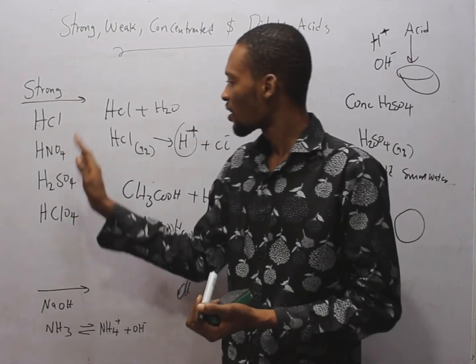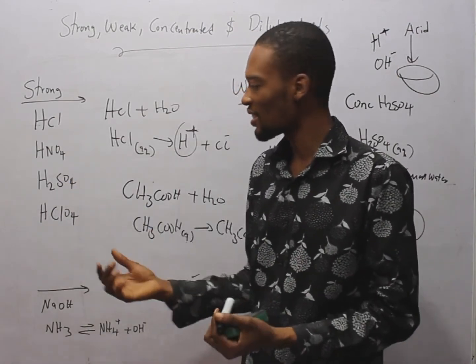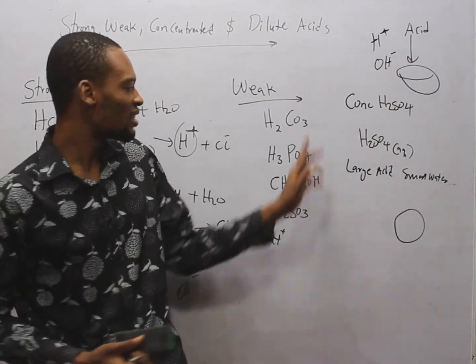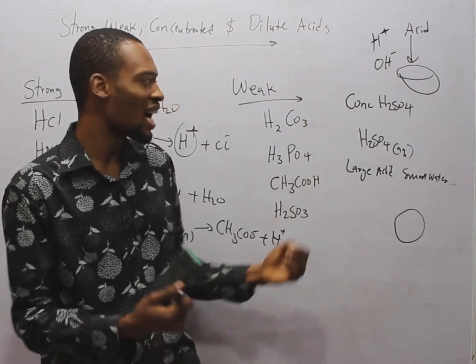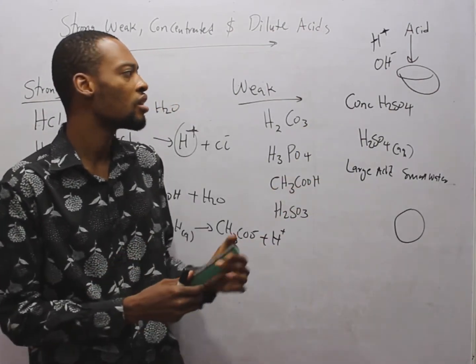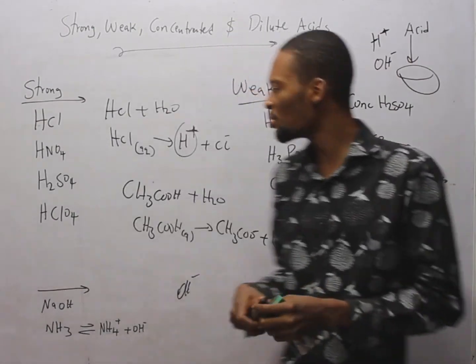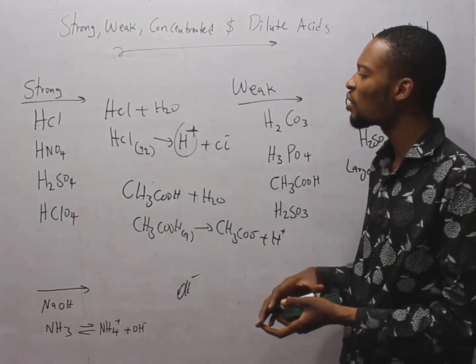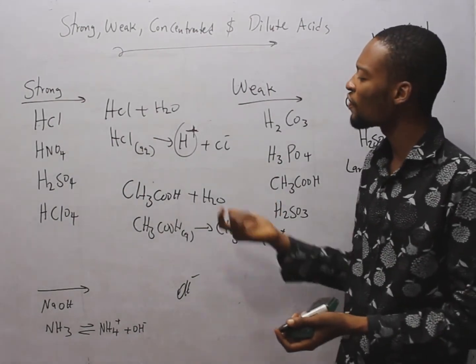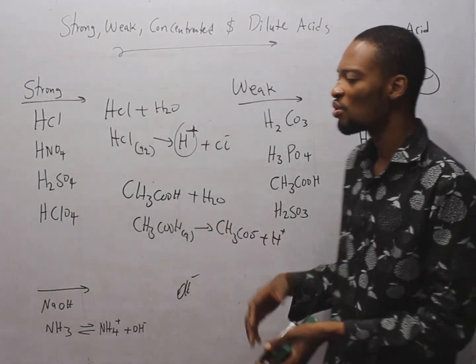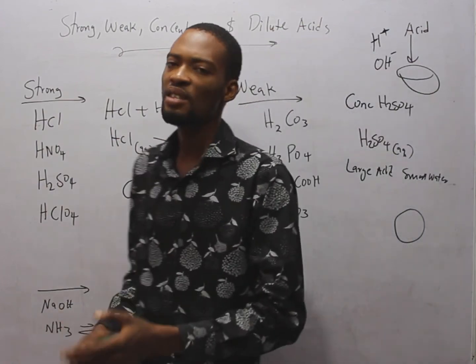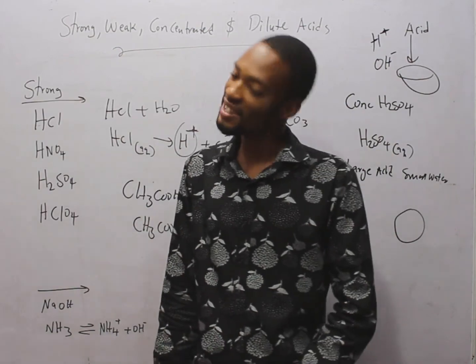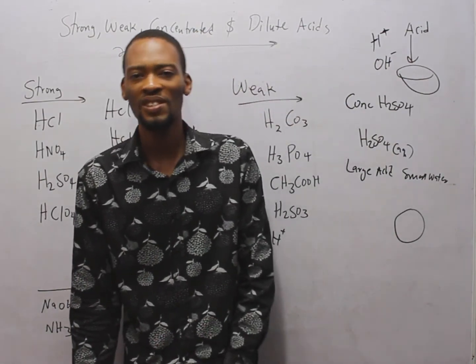So in summary, these are strong acids because they dissociate completely in solution, while these are weak acids. They don't dissociate completely. So it is your duty to learn them, understand them, in case you see a question. Which of the following is not a strong acid? Which of the following is not a weak acid? You'll know what to answer. So that is the simple logic. I am Isaac, and don't forget to subscribe to this channel for more amazing videos. Enjoy.